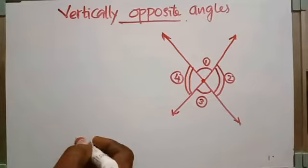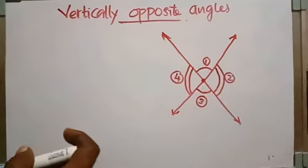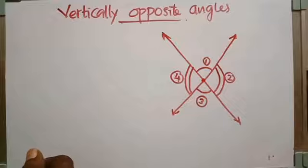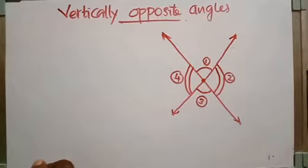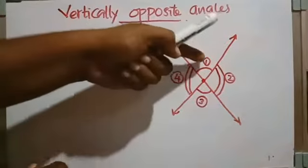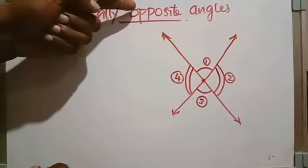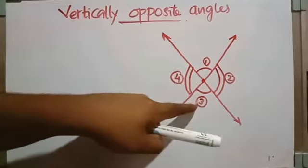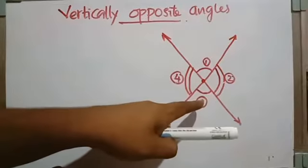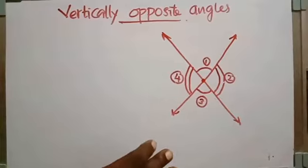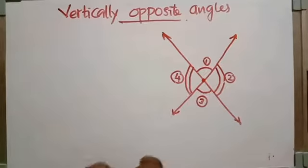When you check angle one and angle two, they are a linear pair. Angle one and angle four also form a linear pair. Angle four and angle three form a linear pair. Angle two and angle three are also a linear pair. So you can find four pairs of linear pairs in the figure.